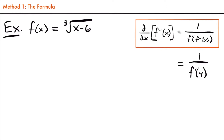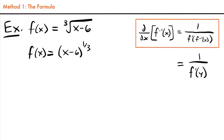The first thing we want to do in order to use this formula is find f prime of our original function. To find the derivative of the cubed root of x minus six, I'm going to rewrite that cubed root as x minus six to the one-third power, because the cubed root is the same as the one-third power. So we'll have f(x) equals x minus six to the one-third power.